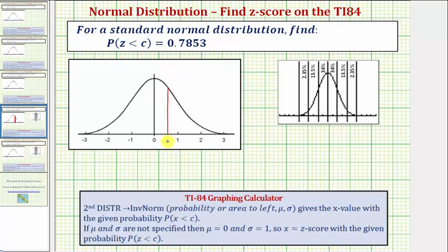So this value of c is a z-score that we're looking for, with the probability of z being less than c equals 0.7853, which means the area to the left of c under the standard normal distribution curve is equal to 0.7853, which would be the shaded region here.